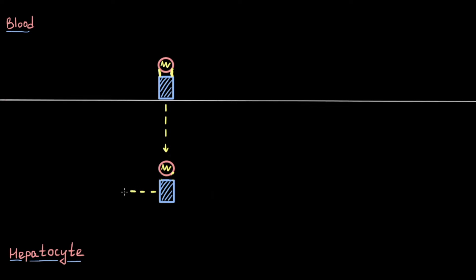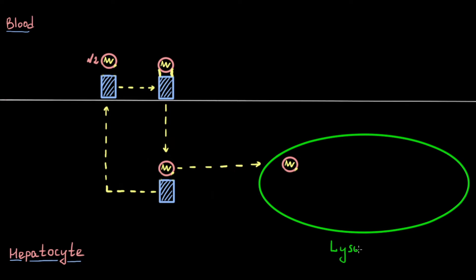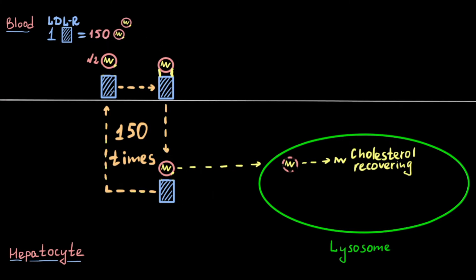After dissociation, the low-density lipoprotein receptor recycles to the cell surface and can carry other LDL, whereas the low-density lipoprotein is directed to the lysosome for degradation, where cholesterol is recovered. Recycling of low-density lipoprotein receptors can be repeated up to 150 times. This means one LDL receptor can move inside the hepatocyte approximately 150 molecules of low-density lipoproteins.